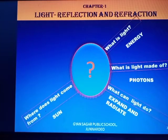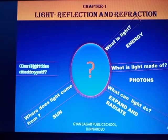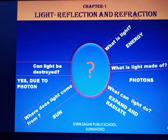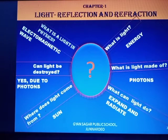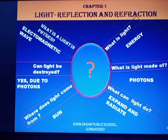Where does light come from? Light comes directly or indirectly from the sun. Can light be destroyed? Definitely, light can be destroyed due to the presence of photons. Now the last question: what is light in physics? Light is a form of energy, but in physics, light is an electromagnetic wave.